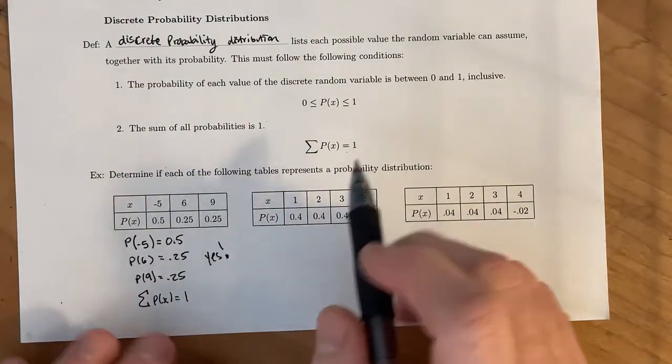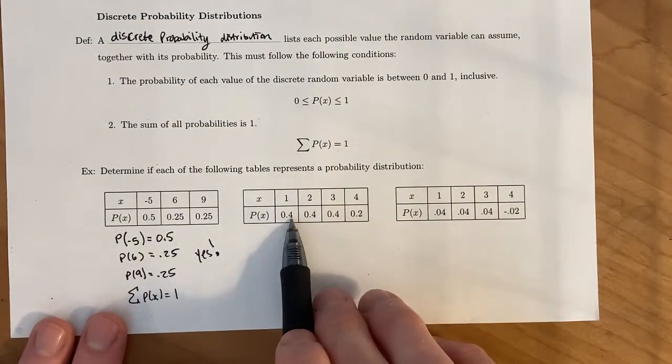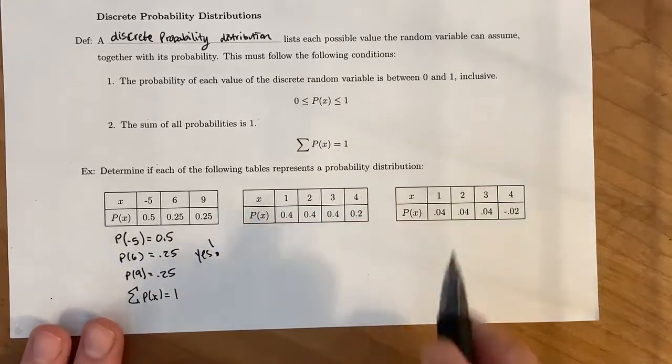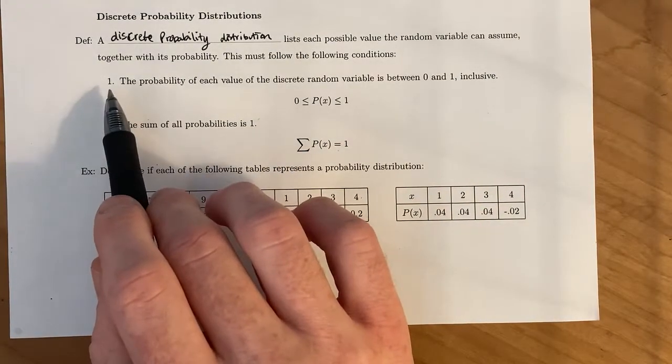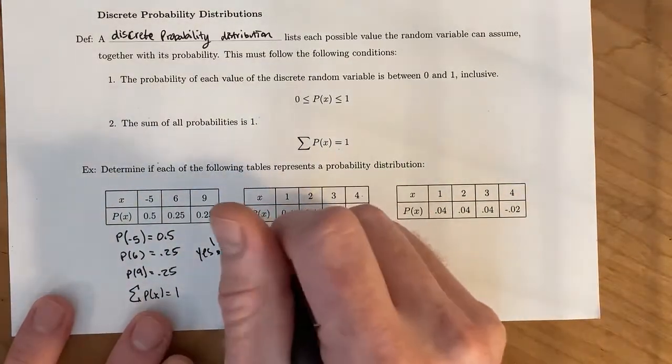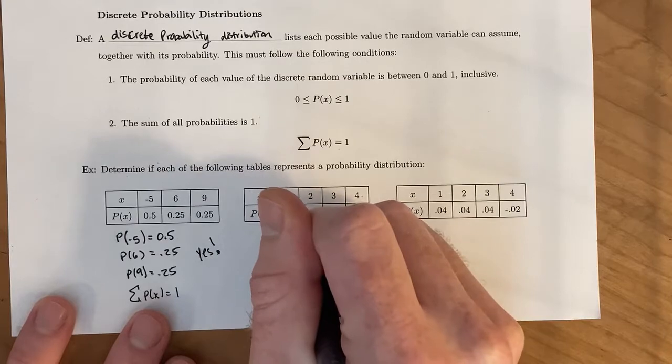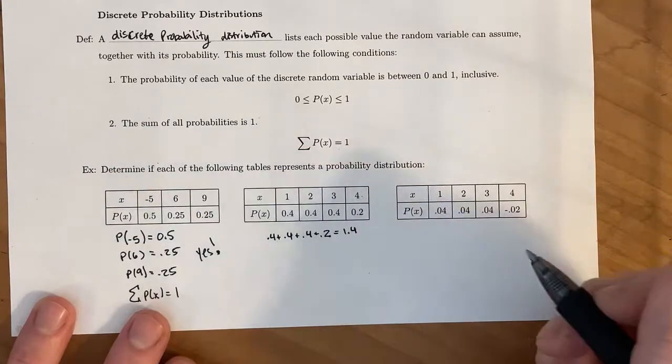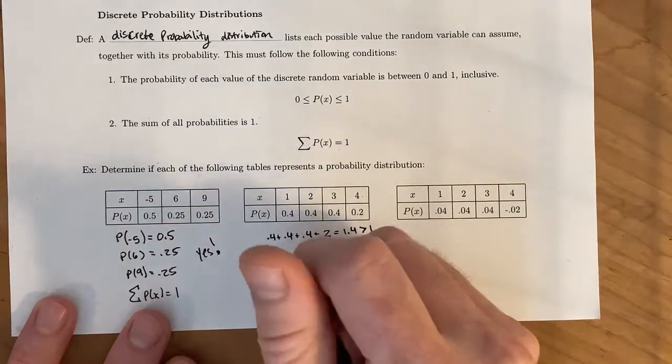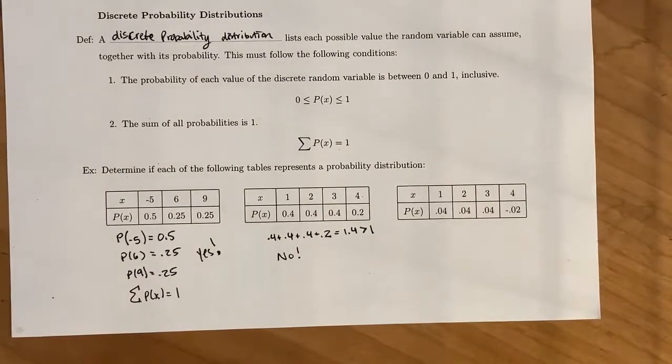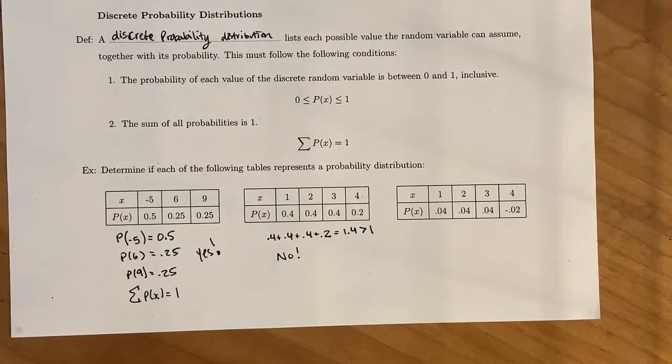Now, if we come over here, again, notice that the probability of one is 0.4, probability of two is 0.4, probability of three is 0.4, probability of four is 0.2. So the first part works. Now, if we come down here and we add these up, so if we take 0.4 plus 0.4 plus 0.4 plus 0.2, we end up getting 1.4, which is larger than one. And so this is not a probability distribution, this table, because the sum adds up to greater than one. And we know that the sum of all probabilities has to equal one.